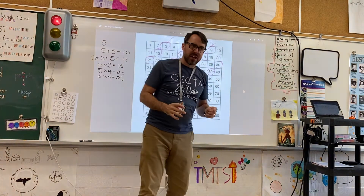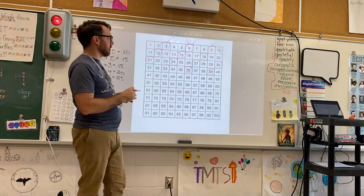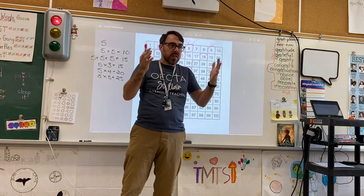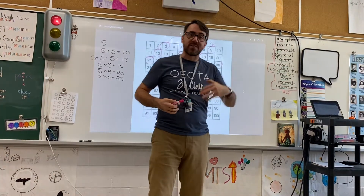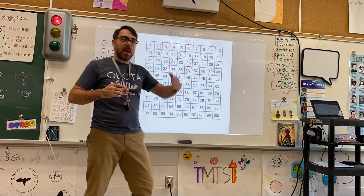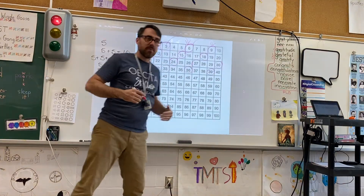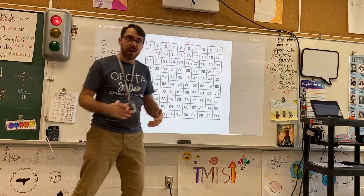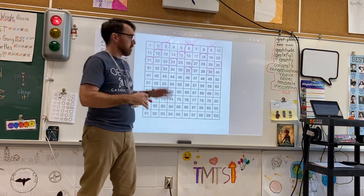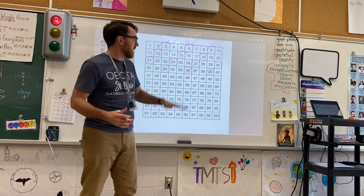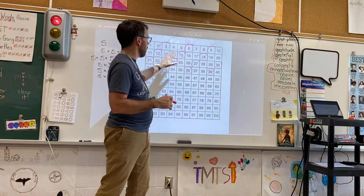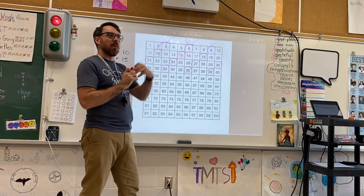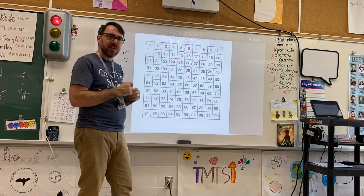Prime numbers especially make really interesting patterns like that. But all you need to know for this is that multiples just means a number that you can add up to make other numbers, or groups of that number. Multiples of five: five, ten, fifteen, twenty, and so on. Multiples of three: three, six, nine, twelve, fifteen. The word multiples just means I'm taking that number and multiplying it.